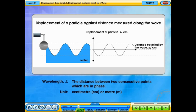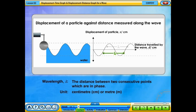The wavelength, lambda, is defined as the distance between two consecutive points that are in phase. The wavelength of a wave is the distance measured from one crest to the next crest, from one trough to the next trough, or any other two consecutive points on the graph which are in phase. Wavelengths are measured in centimeters or meters.